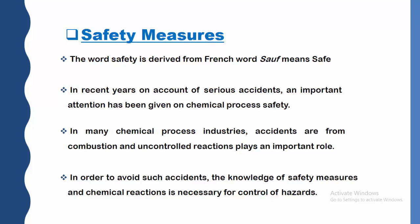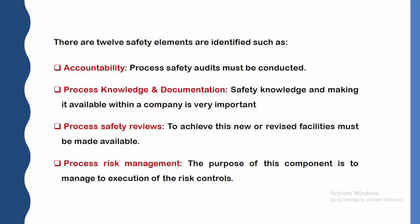In order to avoid such accidents, knowledge of safety measures and chemical reactions — how to perform them — are necessary for control of hazards in a chemical industry. So, what are those safety measures that have to be taken? There are 12 safety elements identified.